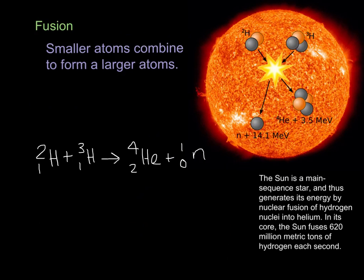Fusion is the opposite of fission. Fusion is when two smaller atoms combine and form a larger one. Now, fusion reactions require temperatures in excess of 40 million degrees Celsius, and so they usually don't take place here on Earth because, well, we need very high temperatures.